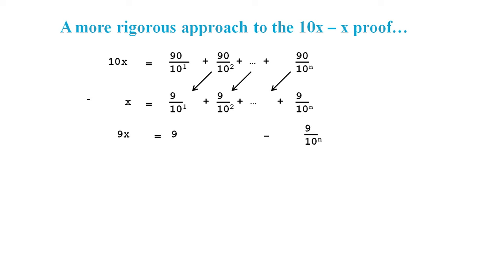And we are left with 9x equals 9 minus 9 over 10 to the power n. And when we divide throughout by 9, we get x equals 1 minus 1 over 10 to the power n.